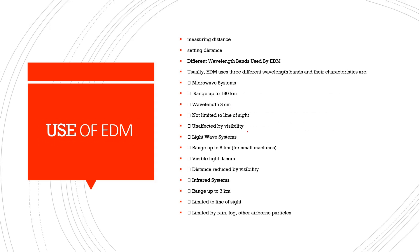EDM uses distance measurement and wavelength. Usually EDM uses 3 different wavelength bands: microwave systems with range up to 150 km, wavelength of 23 cm, with line of sight limited but unaffected by visibility; light wave systems with range up to 5 km for small machines using visible light lasers but reduced by visibility; and infrared systems with range up to 3 km, limited to line of sight and limited by rain, fog, and other airborne particles.